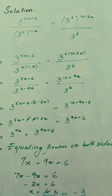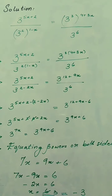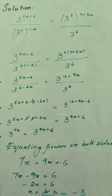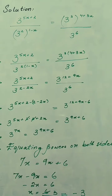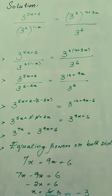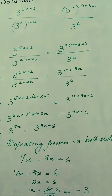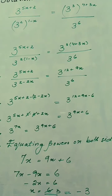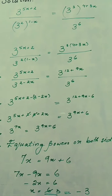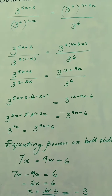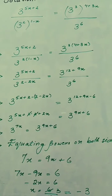Further solving, we have 3 to the power (5x+2) divided by 3 squared multiplied by the whole expression (1−x) on the left side. On the right hand side we have 3 cubed multiplied by the whole expression (4+3x) in the power, divided by 3 to the power 6. This gives us 3 to the power (5x+2) divided by 3 to the power (2−2x) equals 3 to the power (12+9x) divided by 3 to the power 6.